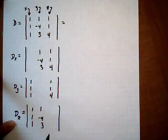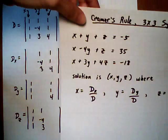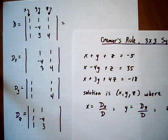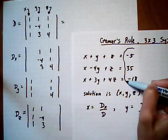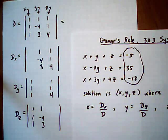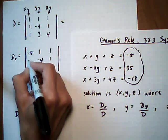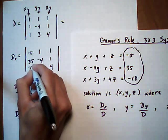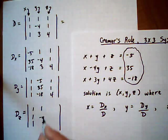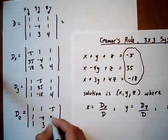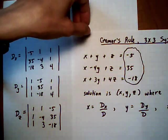And then we fill in the missing columns. The missing columns are all going to be exactly the same. If we look back at the original system here, the missing columns are always filled in by the constants on the right side of the equation. So we put in minus 5, 35, minus 18. Minus 5, 35, minus 18. Minus 5, 35, minus 18.